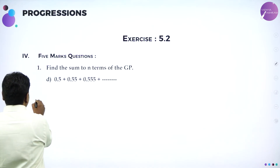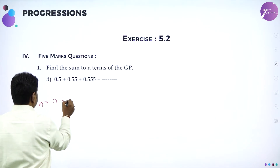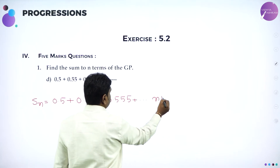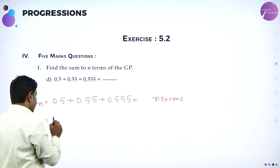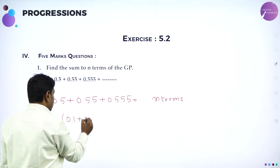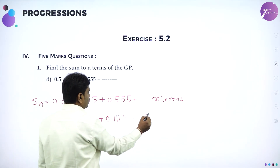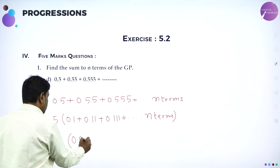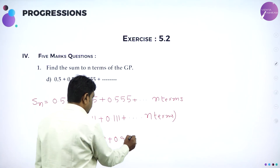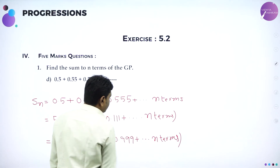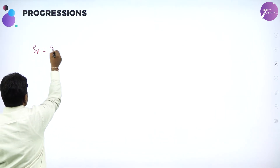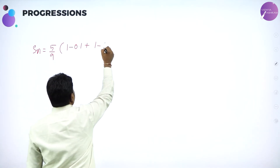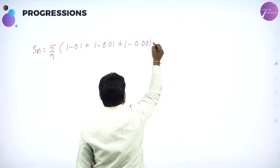Now we will go ahead with the next problem. They want Sn: 0.5 + 0.55 + 0.555 + ... till n terms. As usual, take 5 common — they are all multiples of 5 — it becomes 0.1, 0.11, 0.111 till n terms. So I will write 5/9 × 9 × (0.1 + 0.11 + 0.111...) — it becomes 0.9, 0.99, 0.999 till n terms. Further: Sn = 5/9 × [(1 − 0.1) + (1 − 0.01) + (1 − 0.001) + ...] till n terms.